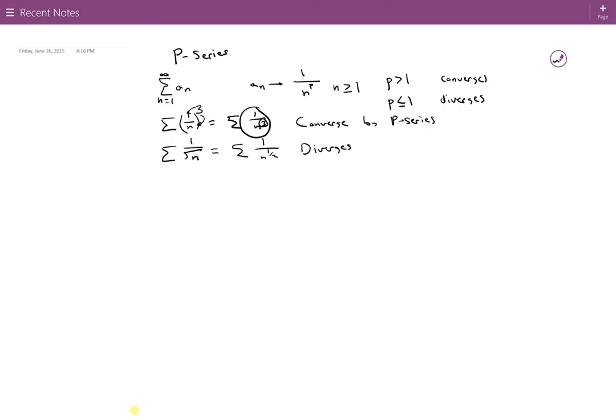One thing I do want to point out is that if p is equal to 1 it will diverge. But it's special because you end up getting 1 over n, and this series is called the harmonic series. Just a little trivia. Nothing special. It does diverge, but they do name it as the harmonic series.